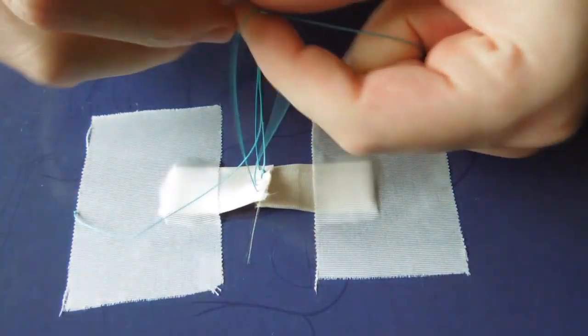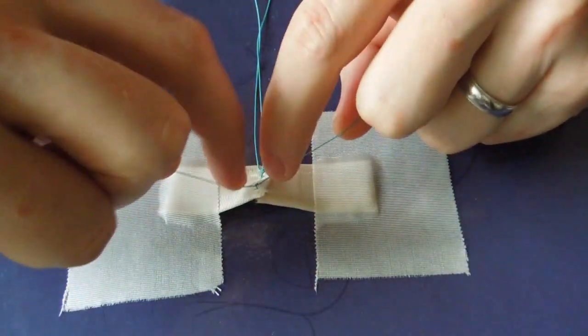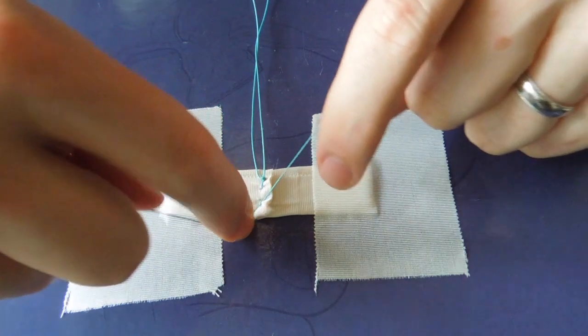The suture we're using here is 0-Ethibond on a controlled release or on a pop-off so that we can remove our needle and perform our hand ties.